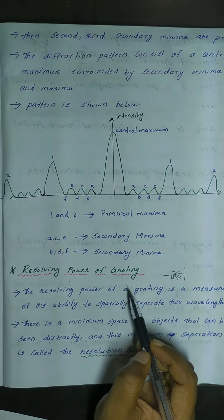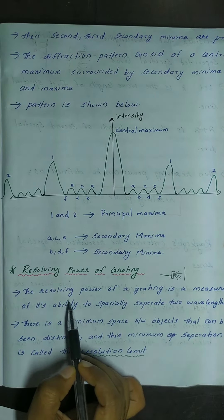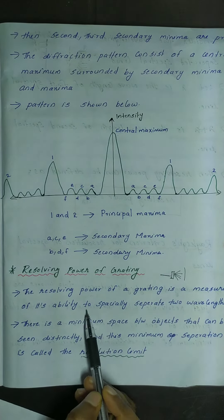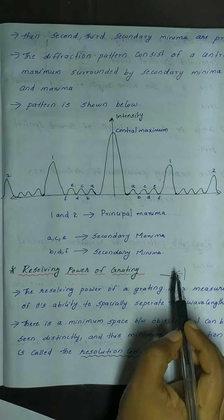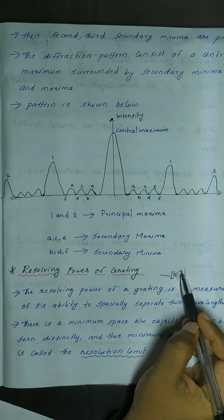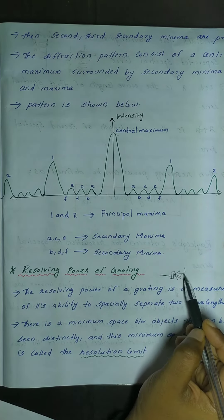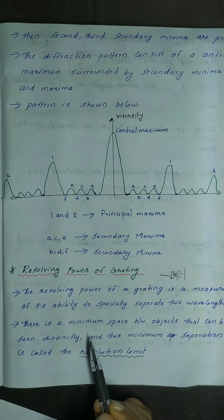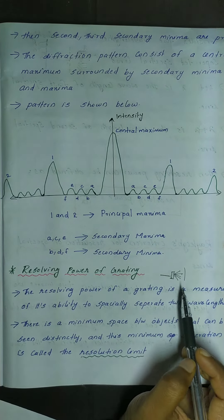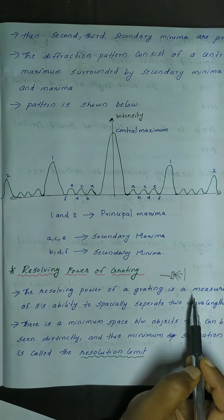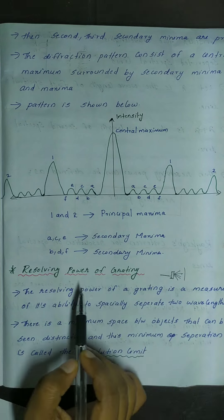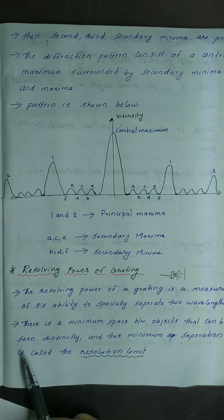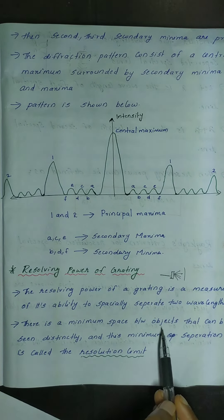The resolving power of a grating is a measure of its ability to spatially separate two wavelengths. These two wavelengths will be specially separated by the grating. It is the minimum space between objects that can be seen distinctly.